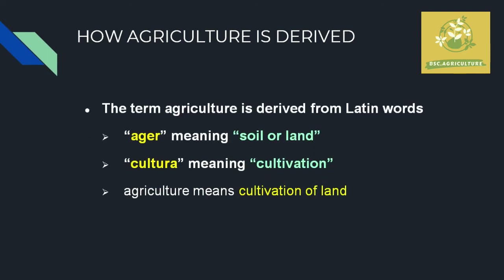Agriculture is derived from a Latin word — 'ager' meaning soil or land, and 'cultura' meaning cultivation. So agriculture essentially means cultivation of land.